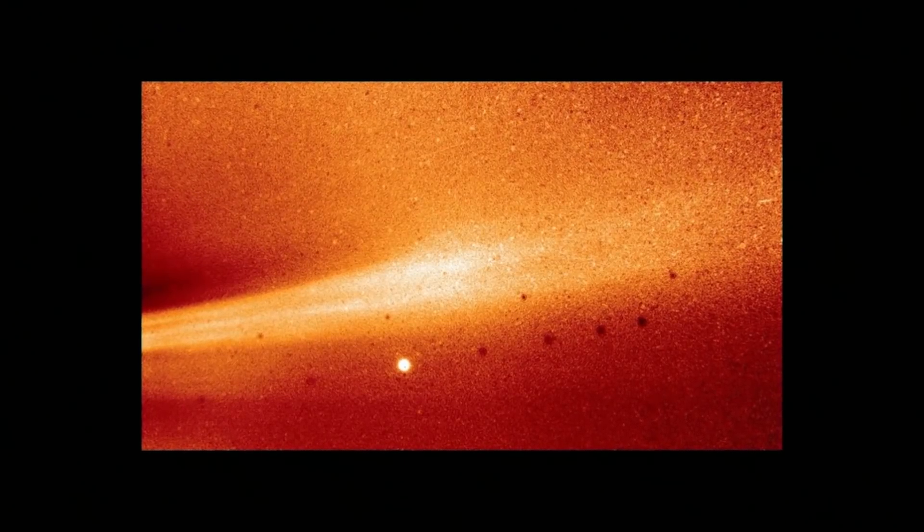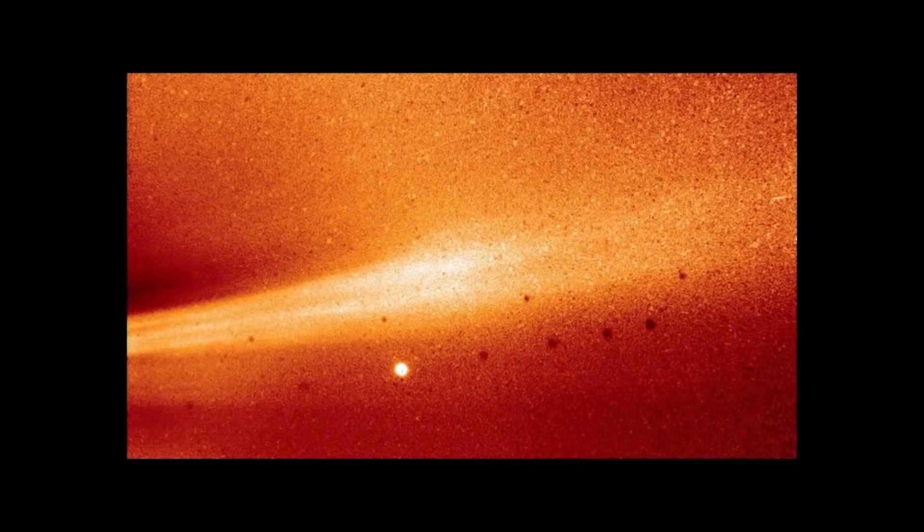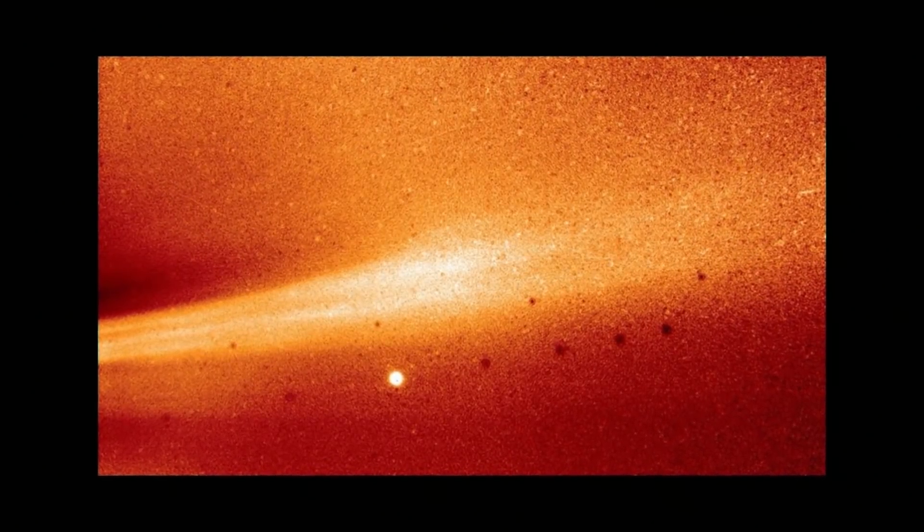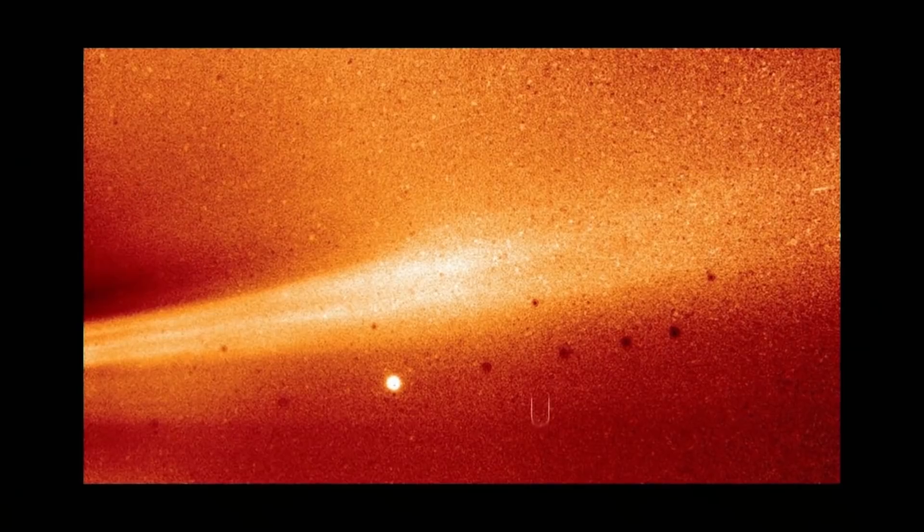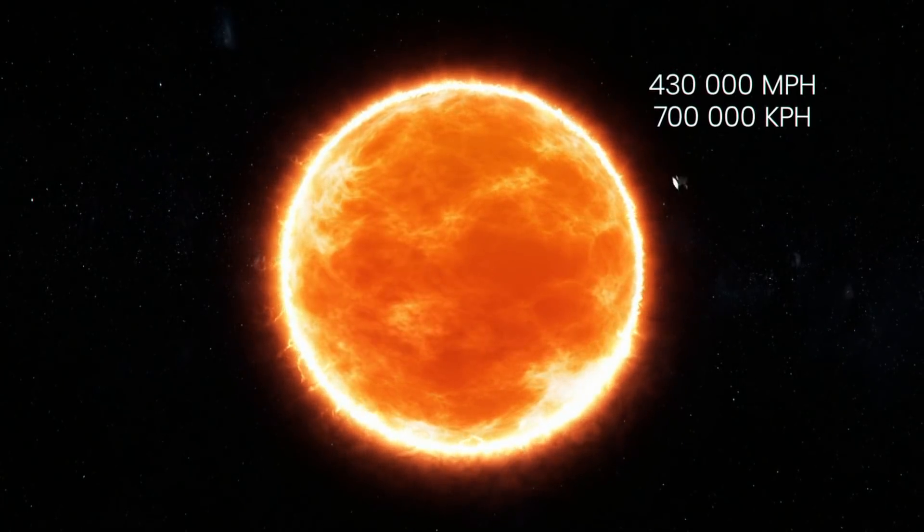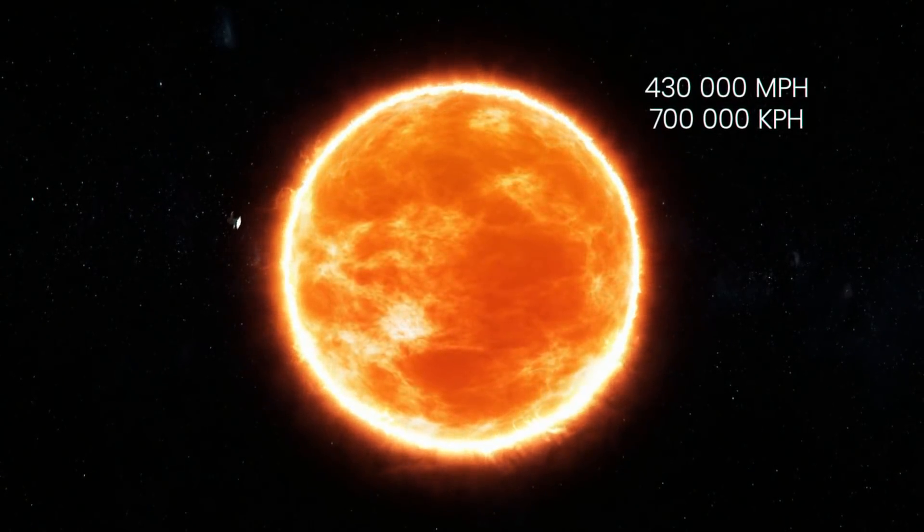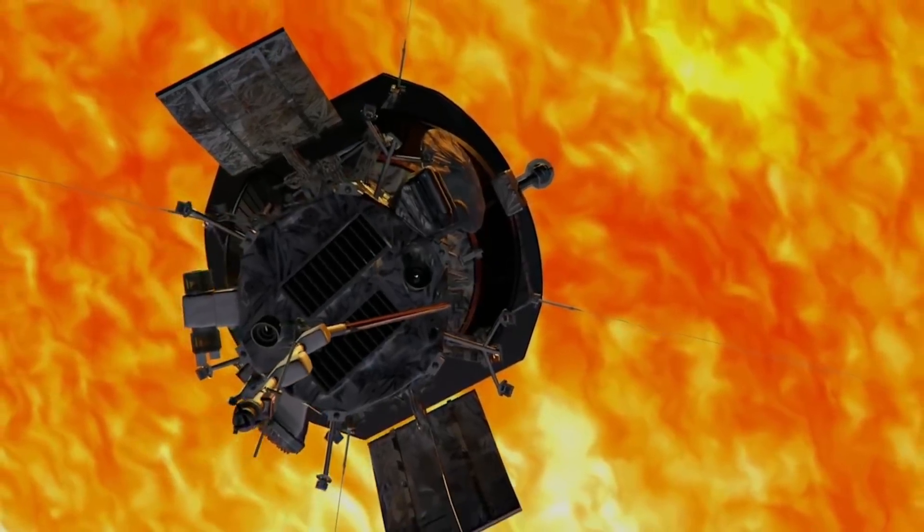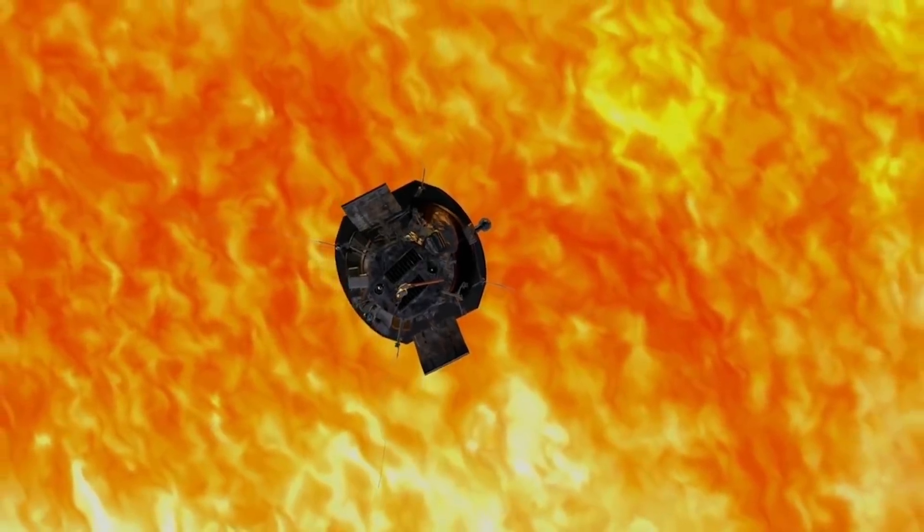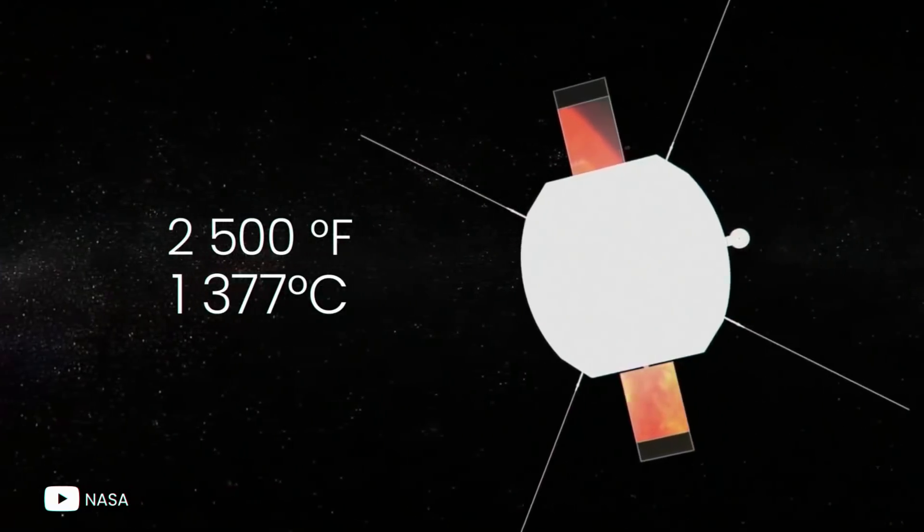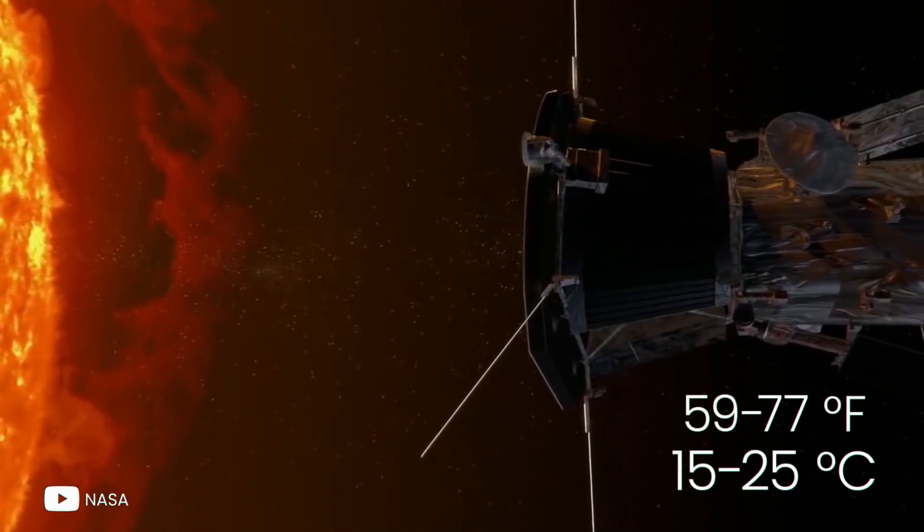One of the first images Parker Solar Probe took during its close encounter with the Sun shows a streamer of plasma in the outer solar corona. The bright spot below the photo is the planet Mercury. By the end of its mission in late 2025, at its closest approach, Parker Solar Probe will be hurtling around the Sun at 430,000 miles per hour. The front of Parker Solar Probe's shield will face radiation and heat as high as 2500 degrees Fahrenheit, but the instruments on the other side will be near room temperature.